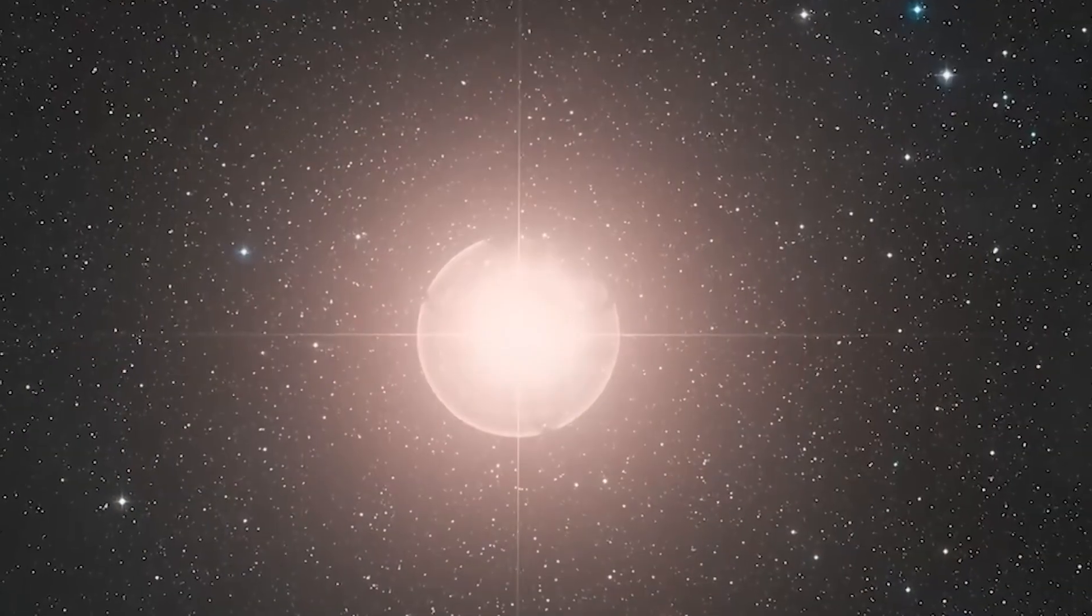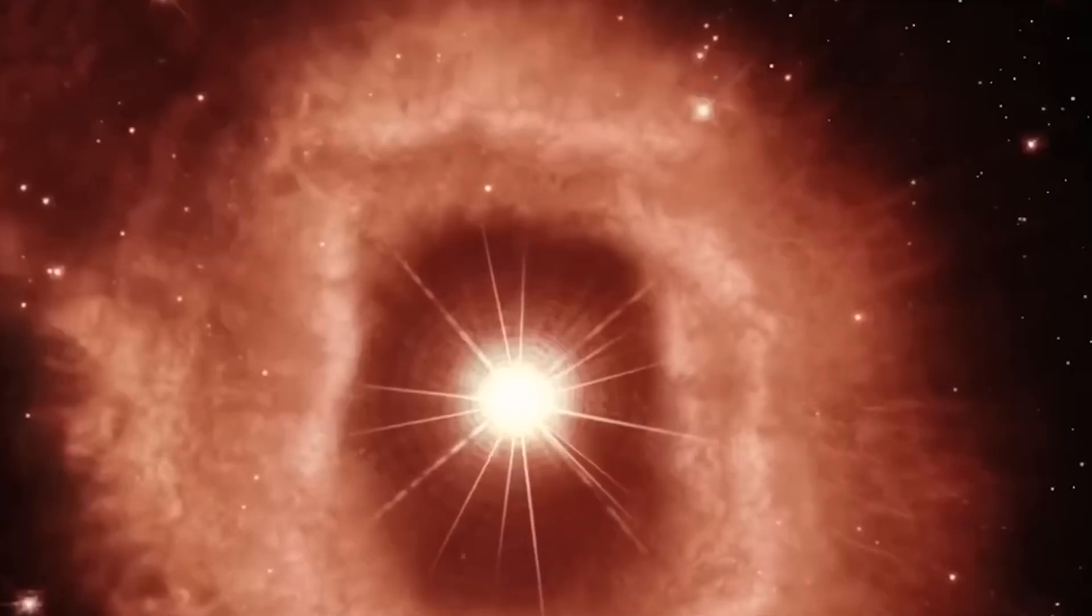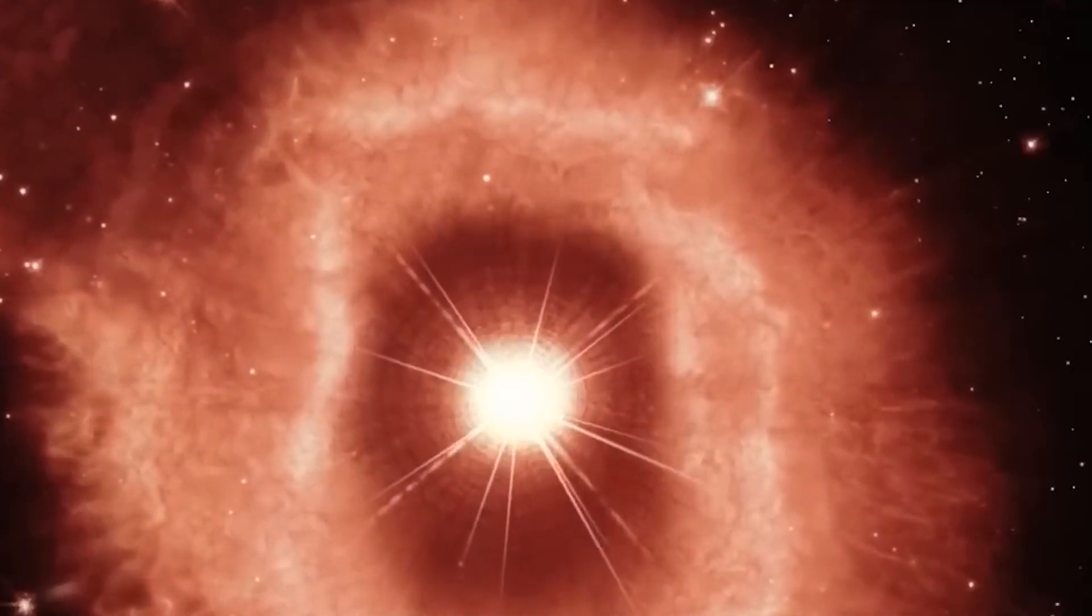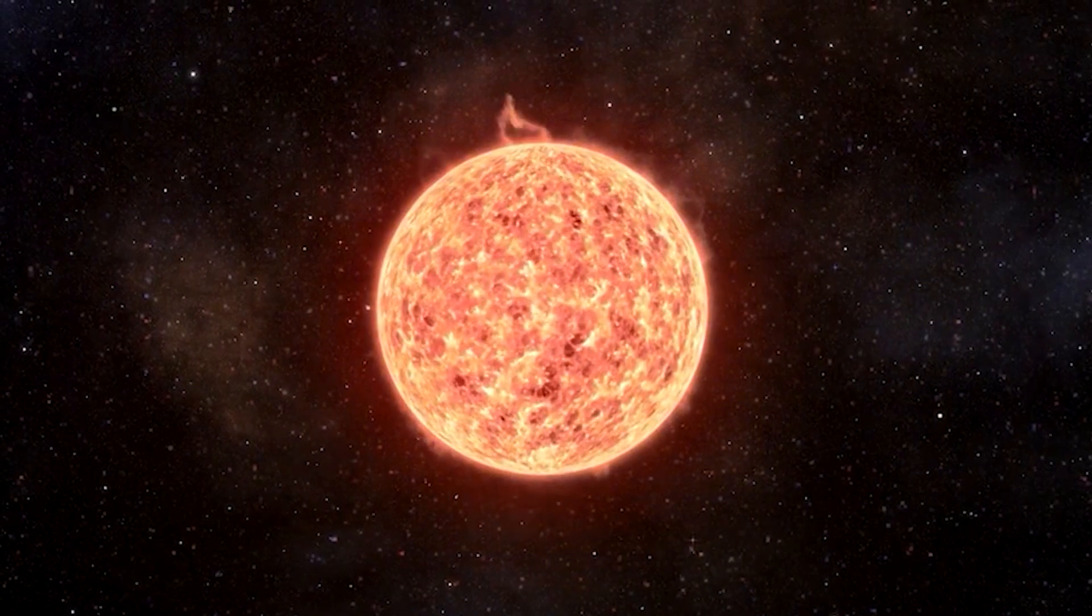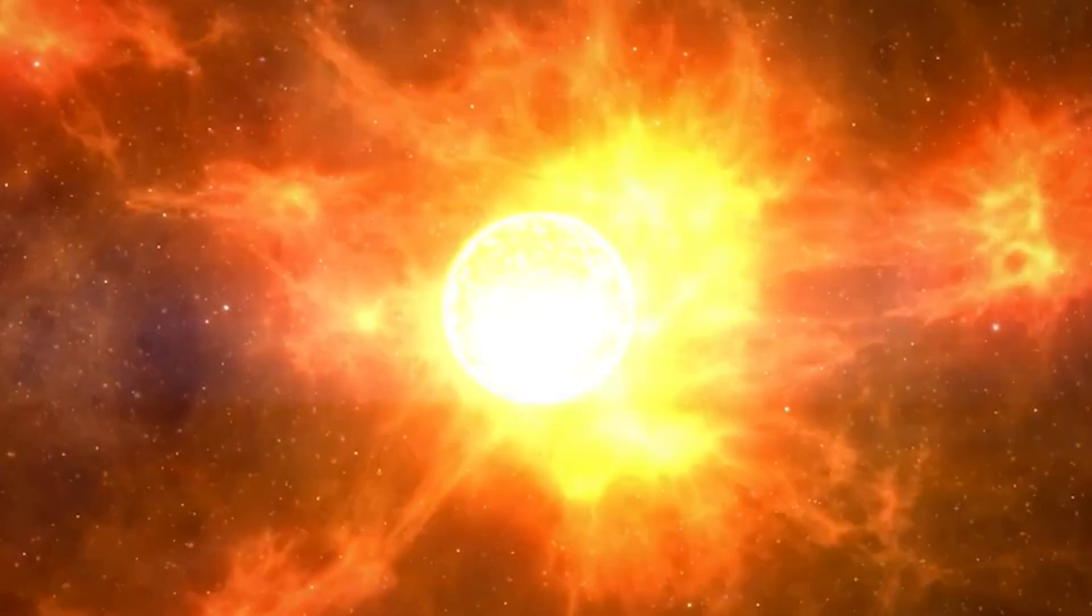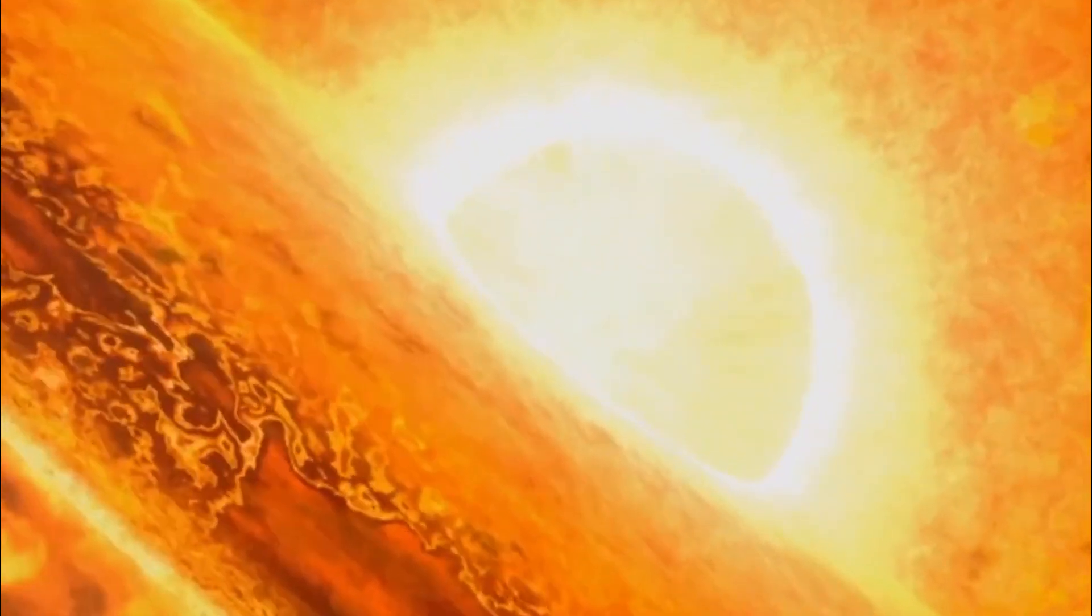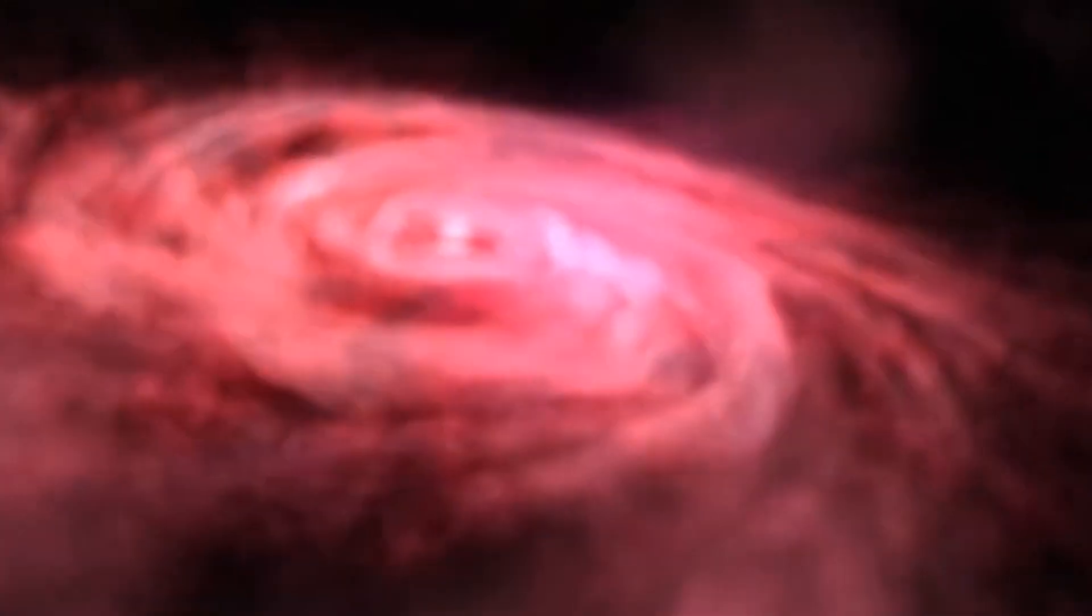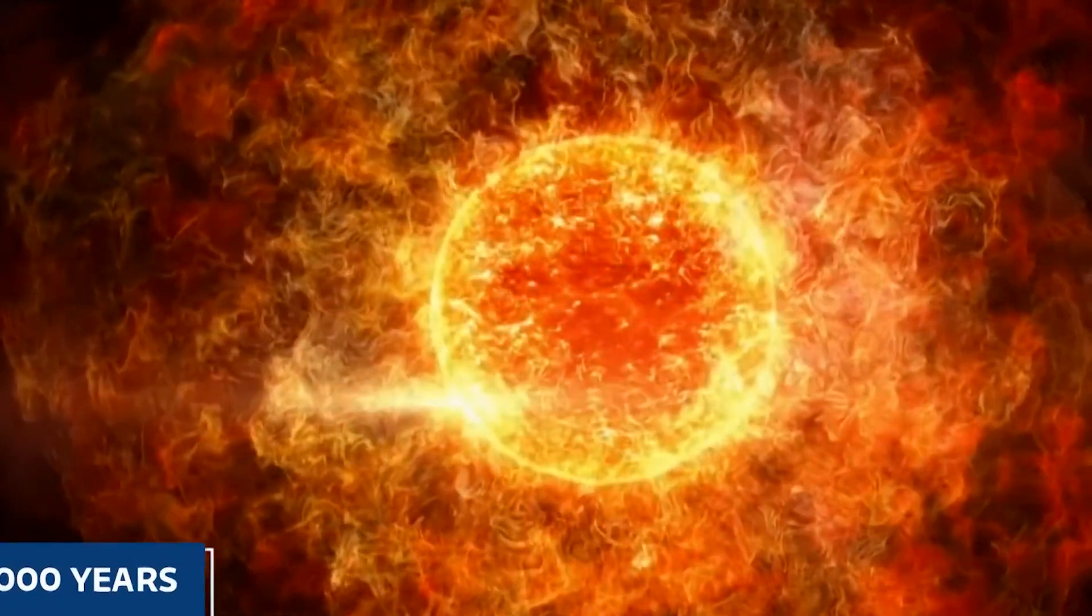One of the most popular explanations for what's going on involves Betelgeuse's evolutionary phase and the ignition of its helium shell. As this supergiant progresses through its stellar life cycle, it consumes hydrogen in its core through nuclear fusion, gradually converting it into helium, a characteristic trait of red supergiants. As hydrogen fusion slows within the core, the star's outer layers expand, leading to its enlargement during the transition to the red giant phase.